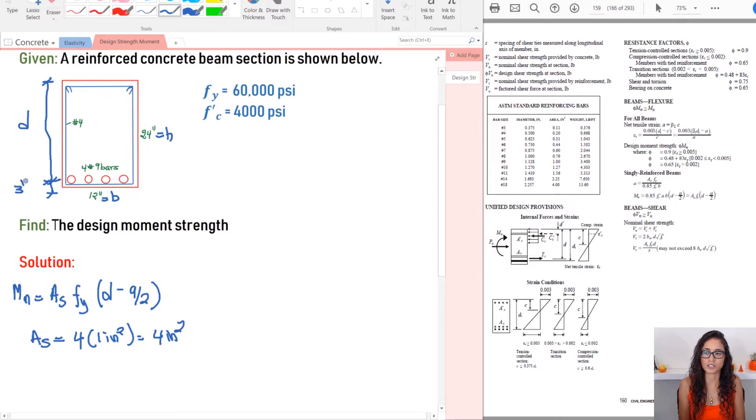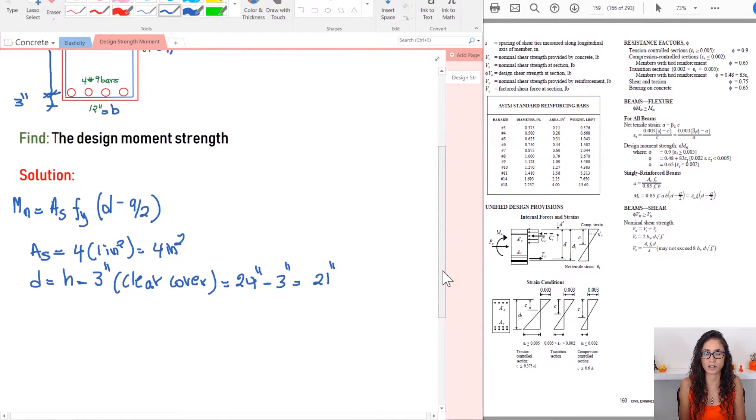So that's usually D and usually this cover right here, it's usually between three and three and a half. So let's just do three inches here. So it's just easier for us to calculate. So what we're going to do is D is going to be H minus the three inch clear cover. So I'm going to just write it down here just so that everyone knows where we got the three inch from. So H is 24 inches minus three inches that gives you 21 inches. So that's your D.